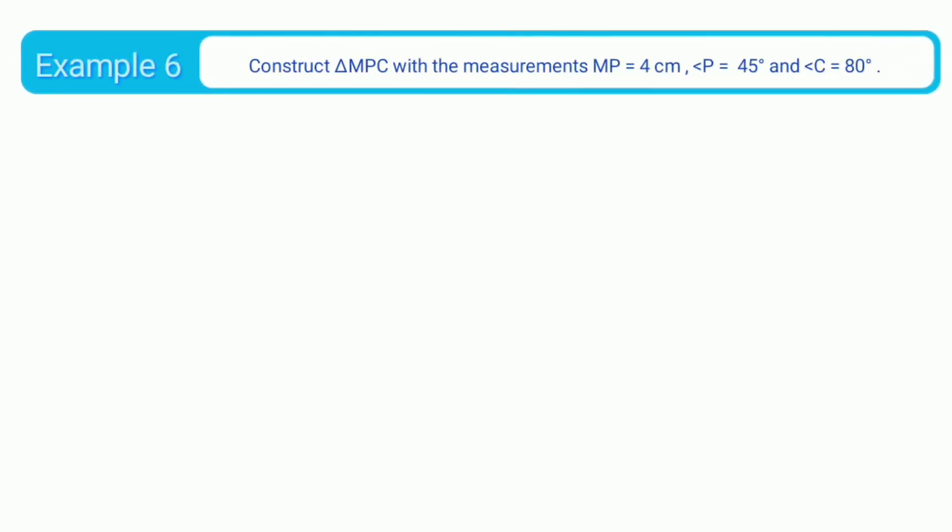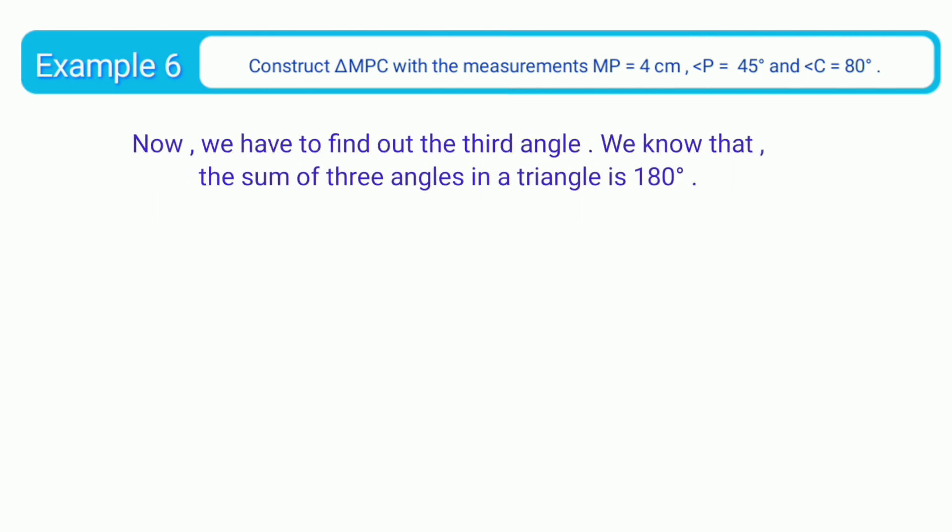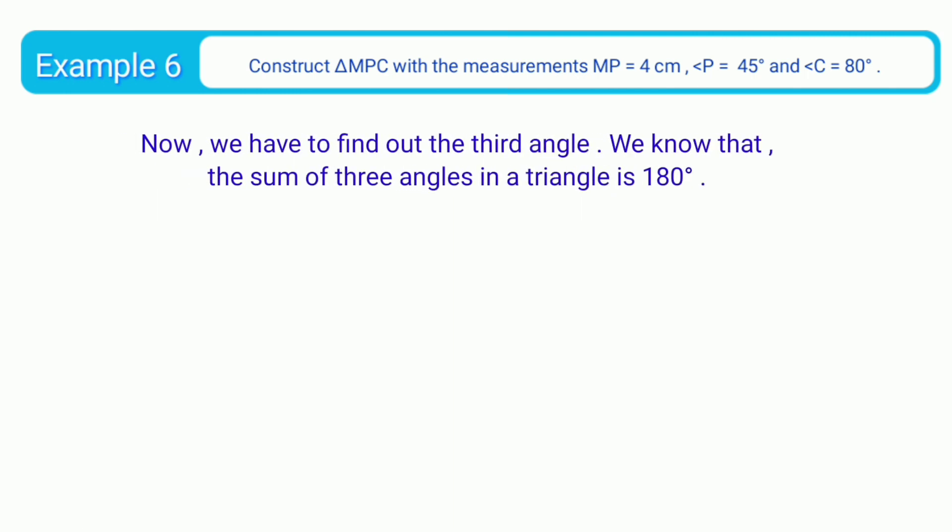Example 6: Construct triangle MPC with measurements MP equal to 4 cm, angle P equals to 45 degrees, and angle C equal to 80 degrees. Now we have to find out the third angle.